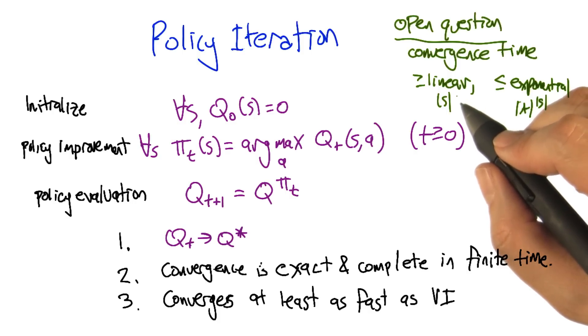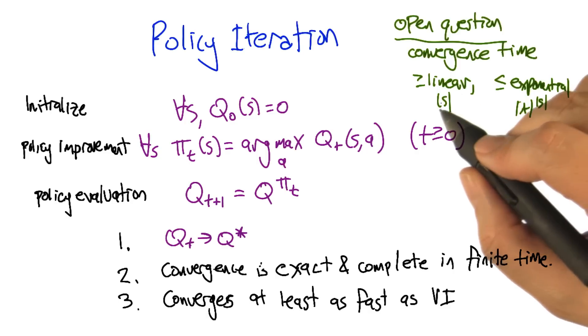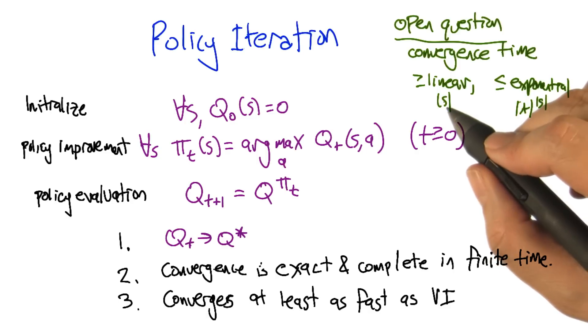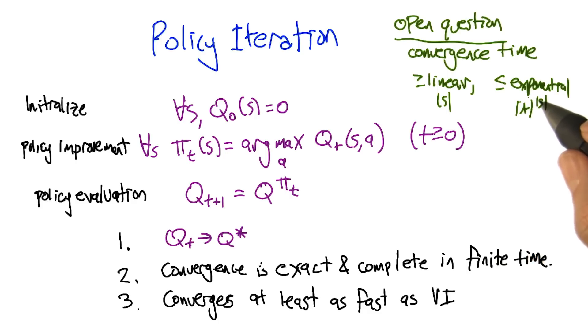So all we know is something really basic, which is that it takes at least number of states iterations, in the worst case. And we know it can't be any worse than number of actions raised to the number of states in exponential. But where it sits in between, we don't really know.